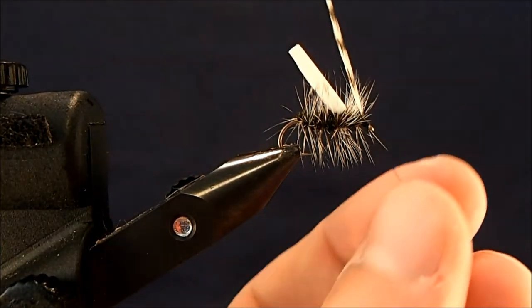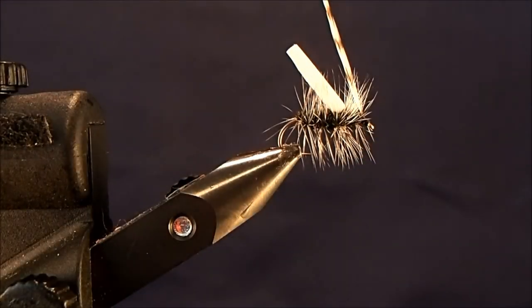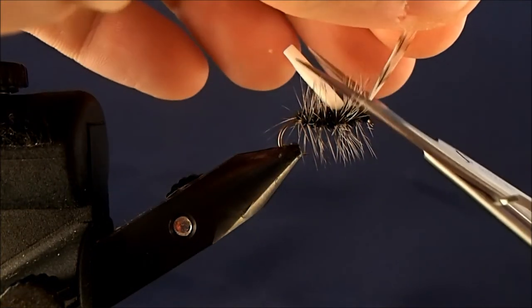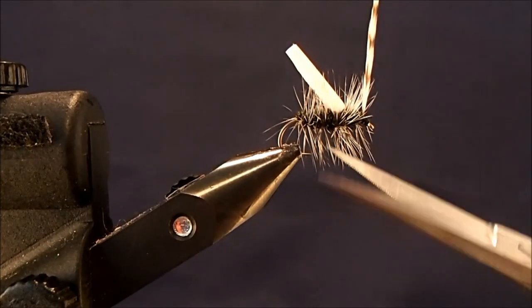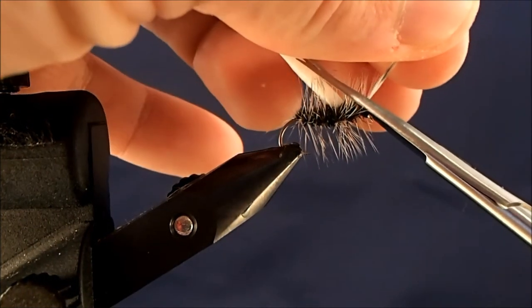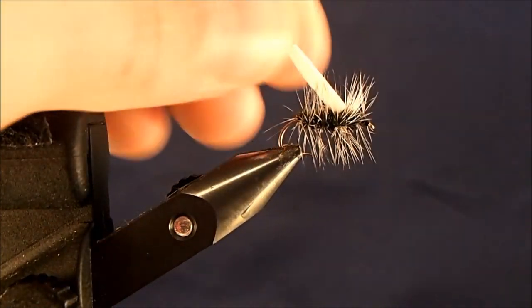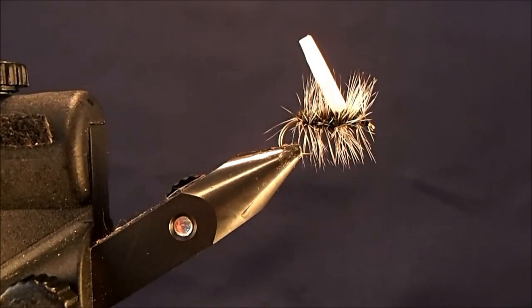Then I can start to clean this fly up. Notice I had one fiber that got caught in underneath. I can take off my stem. And when I take off my stem when I've got hackles, instead of making a cutting motion, I just leave my scissors open and then hold that tight and just start to push it through so I don't have to worry about cutting off the rest of my hackle.